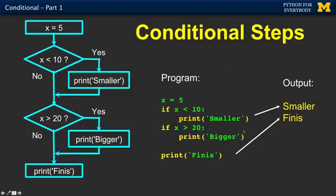You can look at this as if you were driving a car. You execute this statement, then it goes to the next one, then it asks the question: is x less than 10? If the answer is yes, it turns this way, drives down here, runs this code, does that thing, and then rejoins. Then it asks: is x less than 20? Well, since x is five, the answer is no, so that skips that completely, and then it runs this, and then it's done.